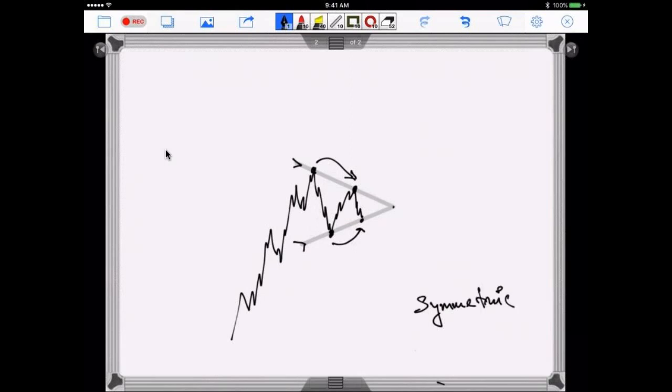The point at which both the lines meet somewhere in the future is called the apex. This is a very good continuation pattern with high probability that the market should give a breakout on the upside. High probability. It can give a break on the downside also, so we should always wait for the breakout.